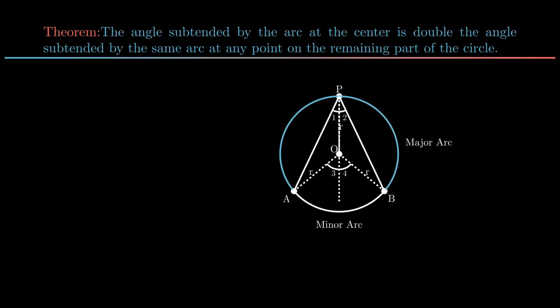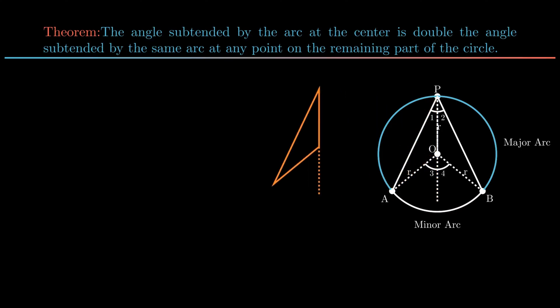Now consider the isosceles triangle AOP as sides AO is equal to PO which are the radii and thus are equal. Since base angles of isosceles triangle are equal, angle PAO is equal to angle APO.